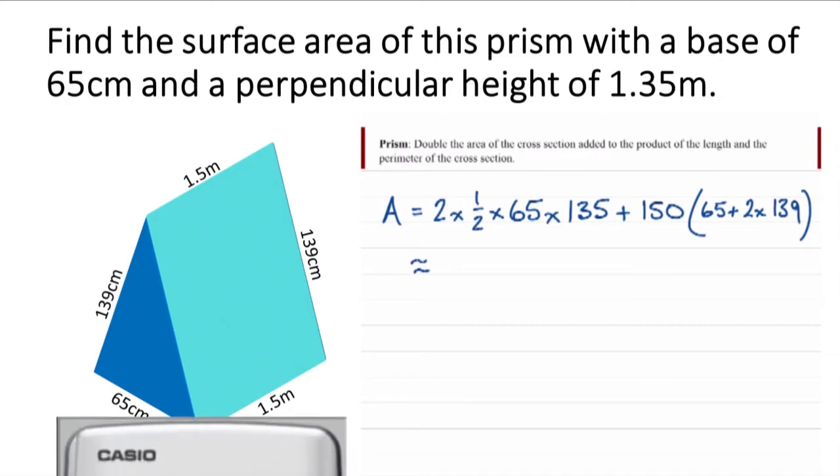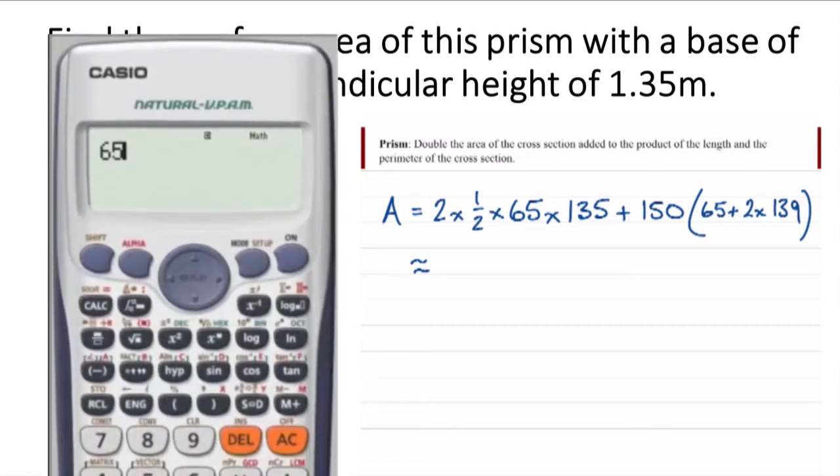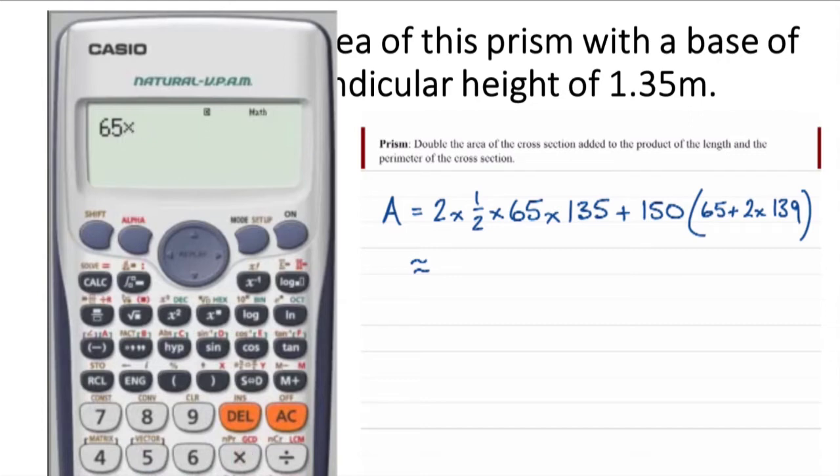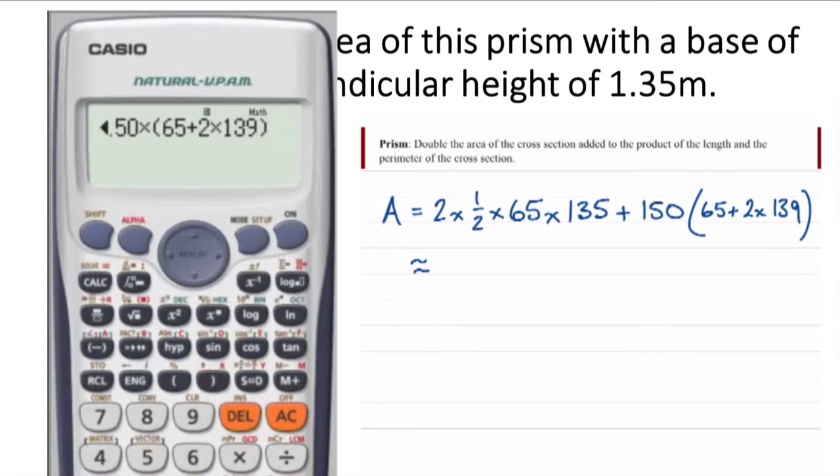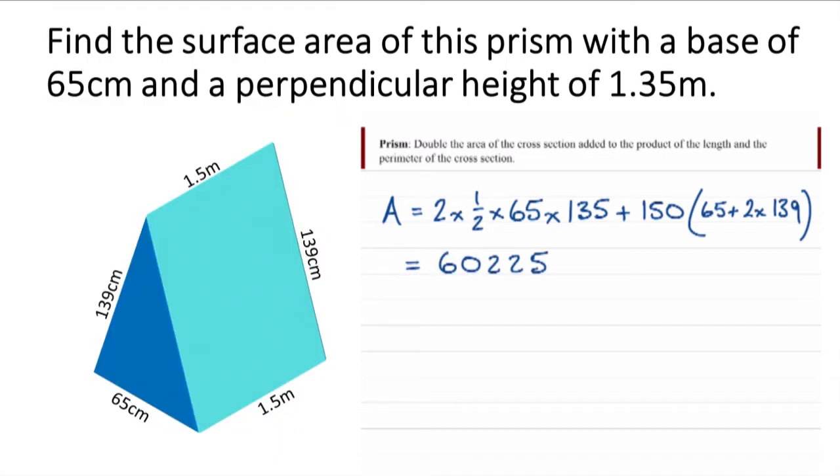So if I type all that into the calculator, well, actually, two times a half, I know that's one, so I won't even bother starting there. I'll start off with the 65 times 135, and then add on the 150, open brackets, and then 65 plus the 239s, because two of the sides of the triangle are 139. Don't forget to close the brackets, and I get 60,225. So because I've been working in centimeters, the area will be in square centimeters. Now, sometimes you're asked to give the answer to three significant figures. So if this was the case, the answer would be 60,200 square centimeters.